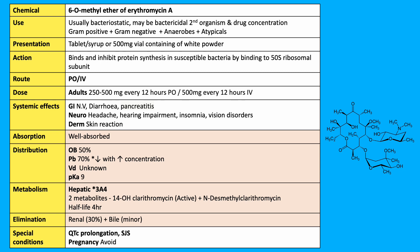Dosing: in adults, the oral dose can be given between 250 and 500mg every 12 hours, whilst the intravenous route is usually 500mg every 12 hours.